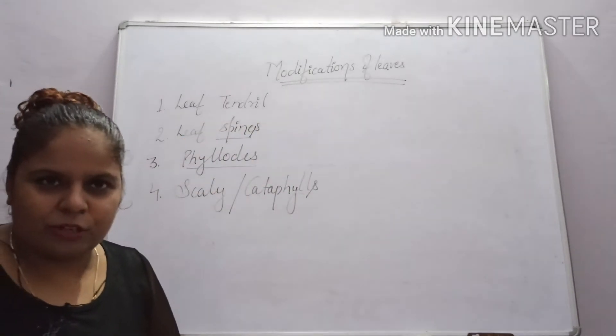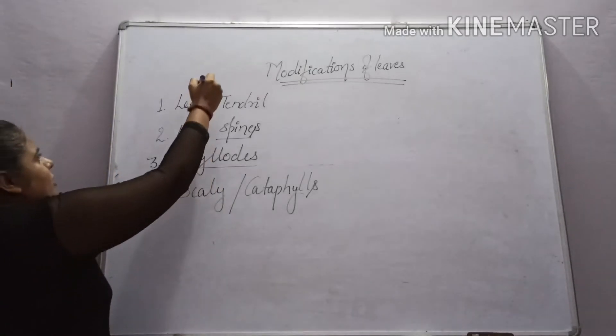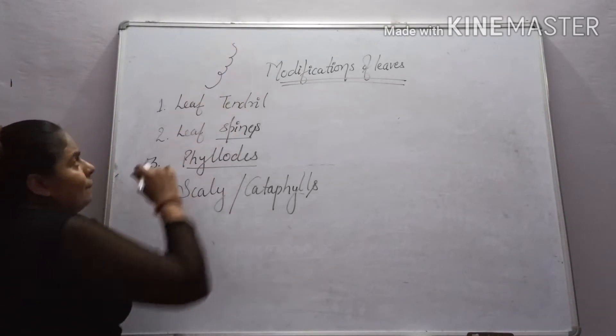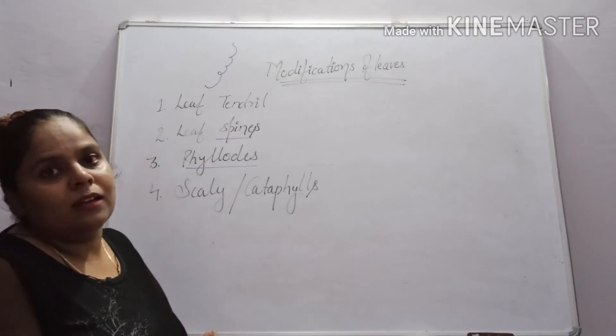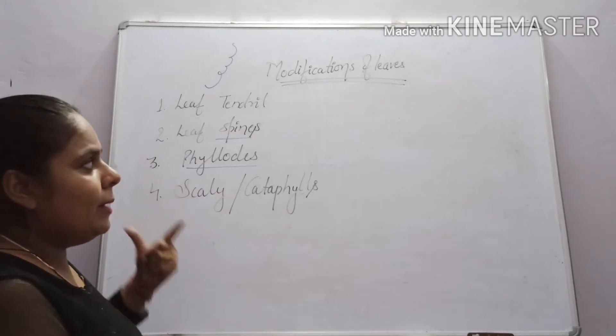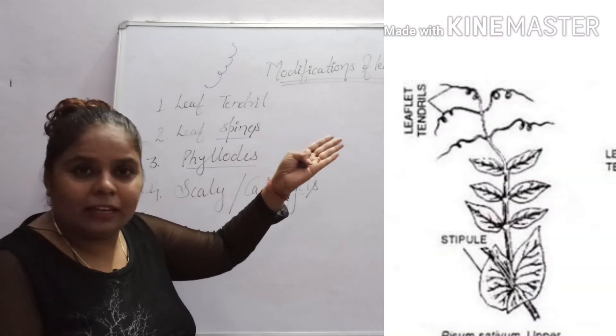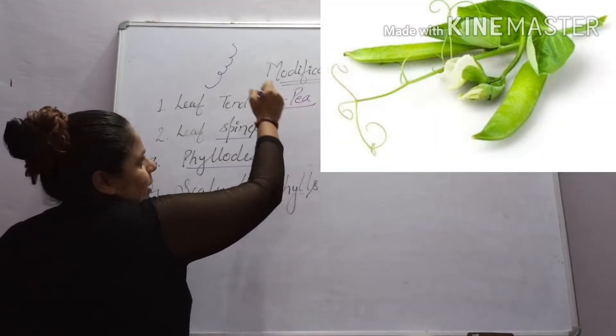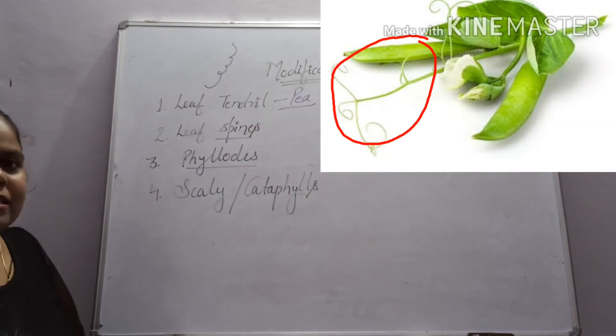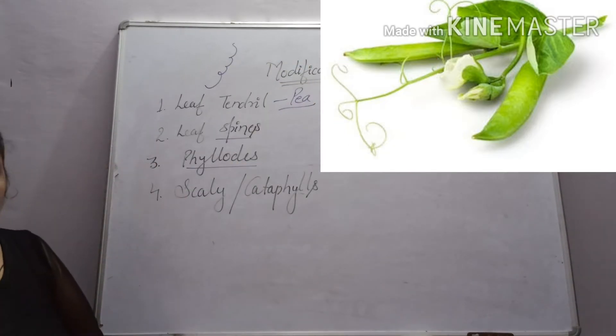Tendrils. We covered this in stem modification. So it's a spring-like structure. But if this structure arises from the stem, then it is stem modification. But if it arises from the leaf, like in pea - see the diagram? - then it is tendril. Clear?